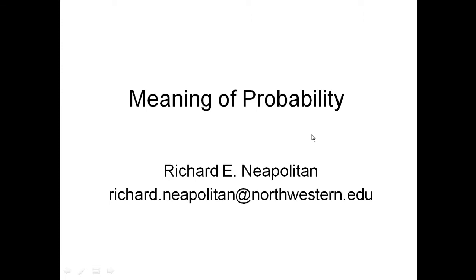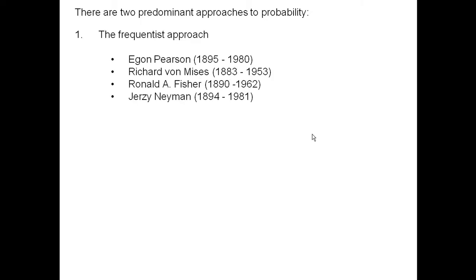The two main approaches — there actually are some others. The two predominant approaches are: the frequentist approach, which I mentioned before, and Richard von Mises is the name most associated with this as a probabilist. As far as statisticians go, Fisher and Neyman are the most well-known, especially Ronald Fisher. He's probably the most famous statistician of all time. We've got a number of tests named after him and the like.